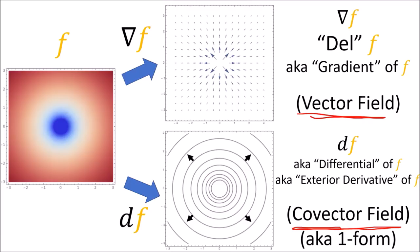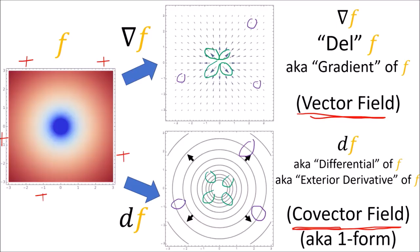These two ideas are clearly different, but they're also fairly similar. We can see that the orientation of these vectors and these covectors are the same — both of them point towards the positive values of the function f. Also, the larger vectors, shown by long arrows, match up with large covectors, shown by densely packed curves. Likewise, the smaller vectors, which are short, match up with the smaller covectors, which are sparsely spaced curves. So del f and df are different concepts, but they're also highly related.